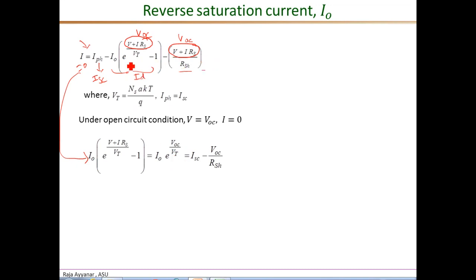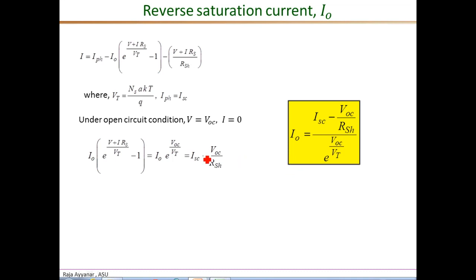From this expression, we see that, since I is 0, this diode current is I-photon minus the shunt resistance current, which is given here. That gives us the final expression for the reverse saturation current I-O, which is this quantity divided by this exponential term.